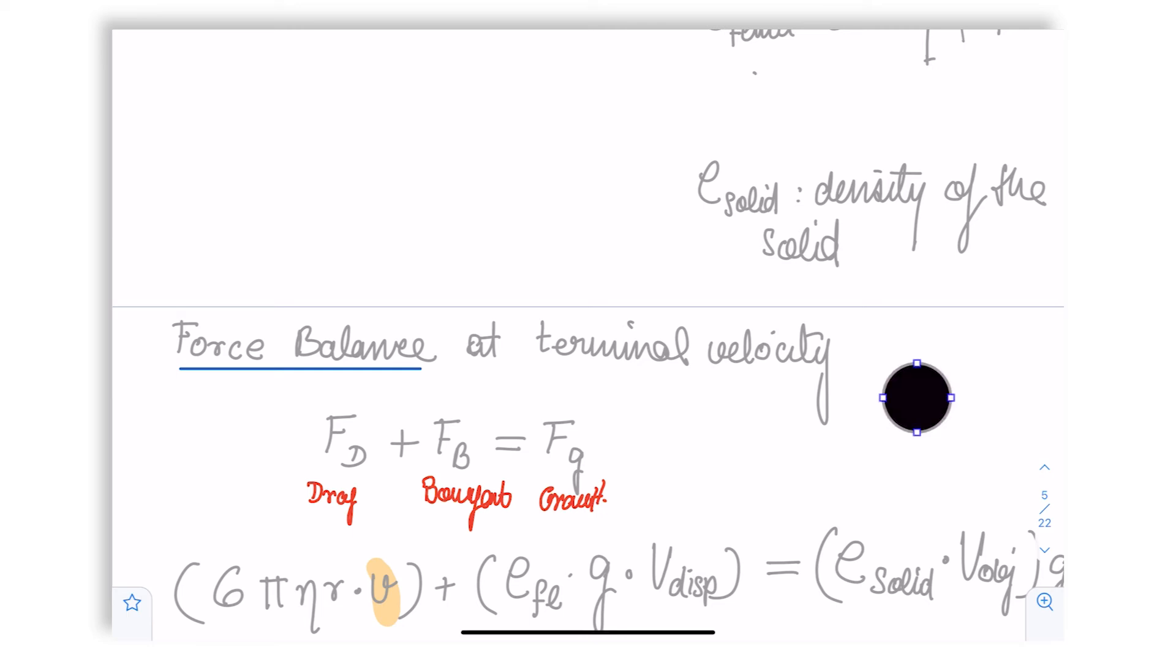We will call this force upwards, force downwards. And therefore we can equate them. Remember, these are all the upward forces—the drag and buoyant force—and this is the only downward force, but sufficient to take it down: the gravitational force.